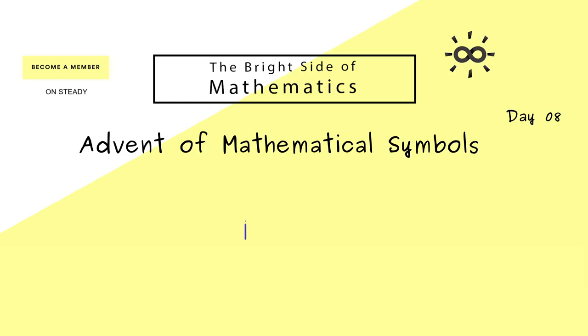The mathematical symbol of today is the product symbol, written with a capital pi. And in the same way as we have it for the sum symbol, we use an index below the letter pi.